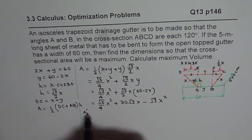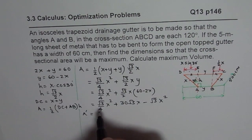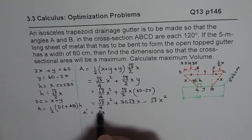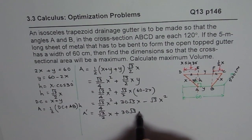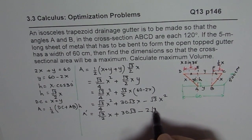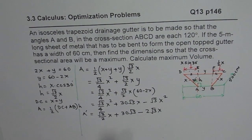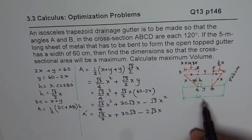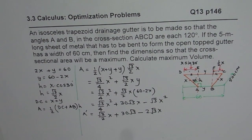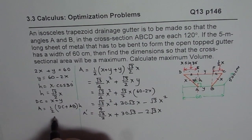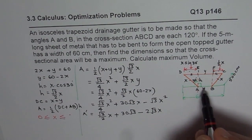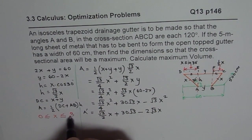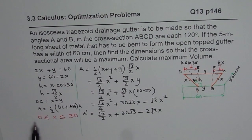Now we find the derivative A′ with respect to X. The derivative of (√3/4)X² is (√3/2)X. The derivative of 30√3·X is 30√3. The derivative of the X² term gives minus 2√3·X. So A′ equals (√3/2)X plus 30√3 minus 2√3·X. The maximum occurs when the derivative equals zero, or possibly at the end points. X is between 0 and 30.